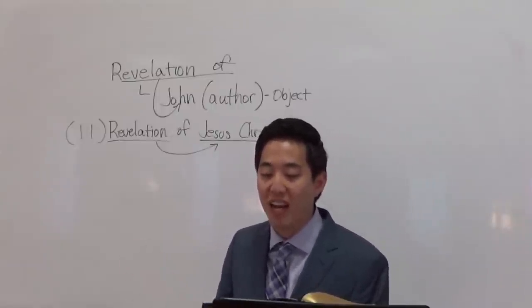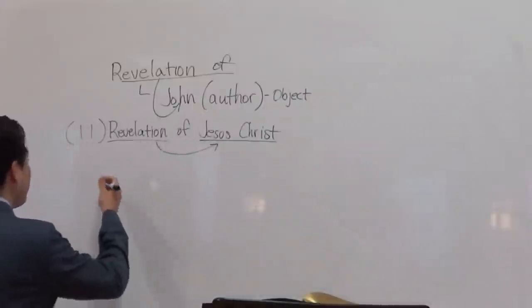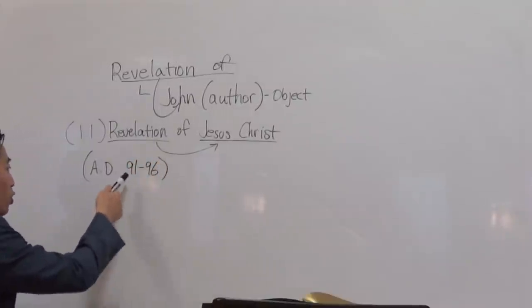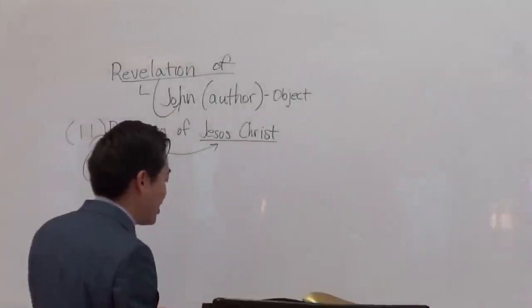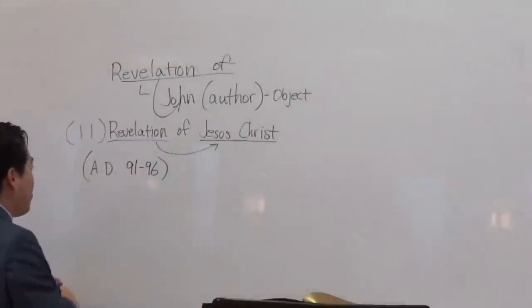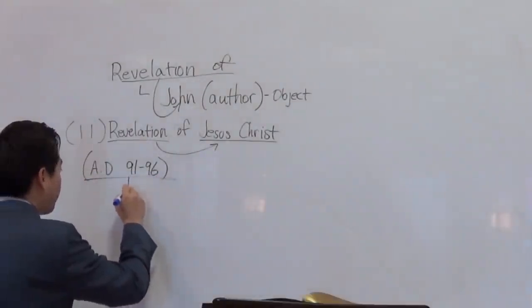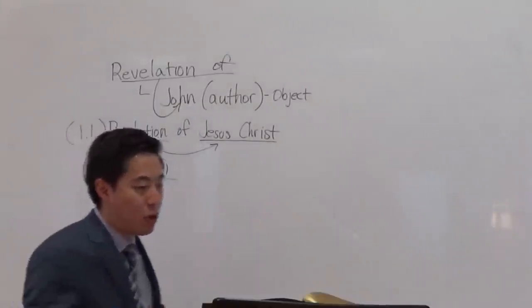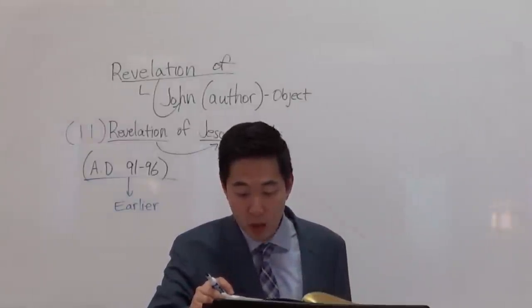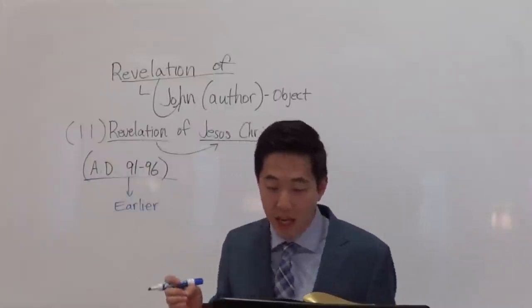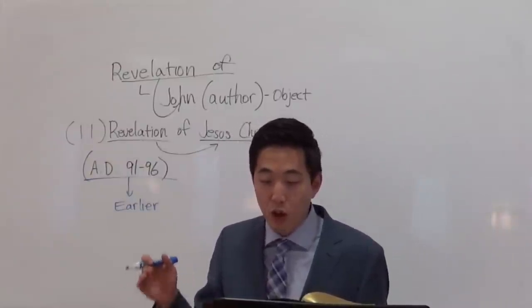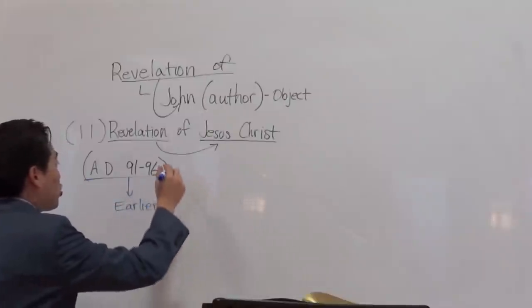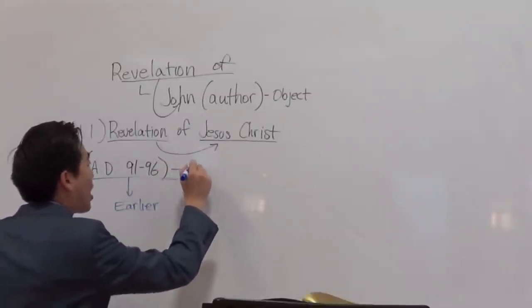We believe John wrote it sometime before AD 91 or AD 96. The date is important because some scholars want to put this at an earlier date so that the prophecies in the book of Revelation do not have to come out true. We believe AD 91 to AD 96, which was long after Nero, sometime during the reign of Domitian.